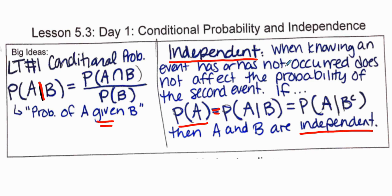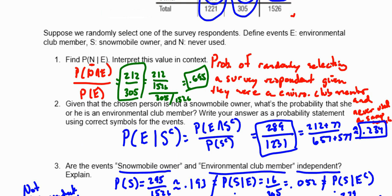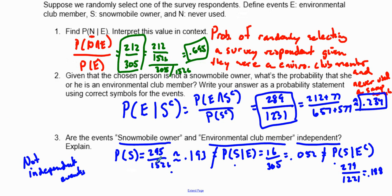We can say these events are not independent because independence means one event does not affect the other one. The probability of being a snowmobile owner should be the same whether you are part of the club or not. I hope this helps you understand how to use conditional statements and determine whether events are independent. Good luck and God bless.